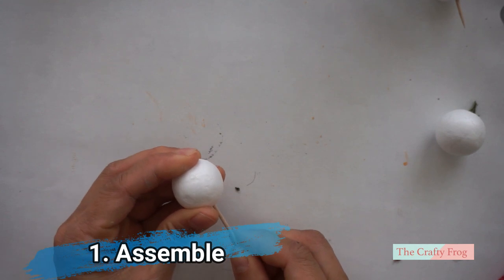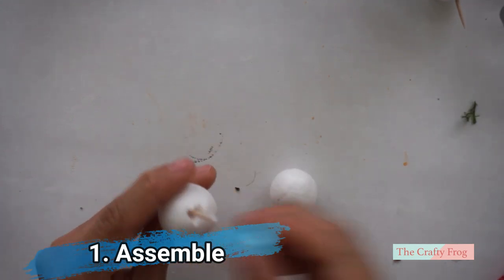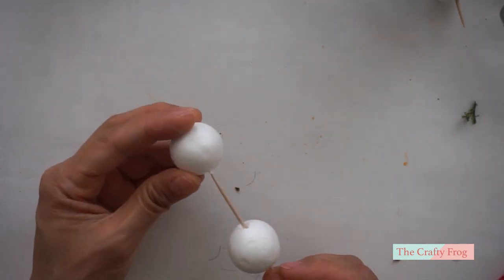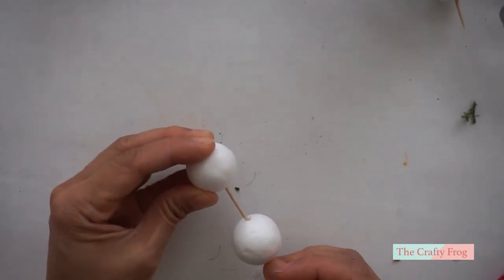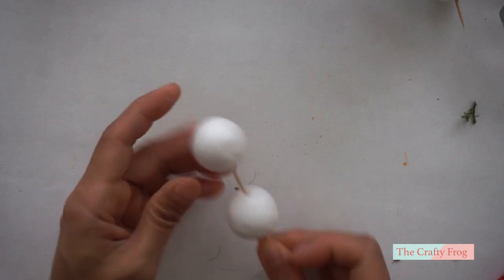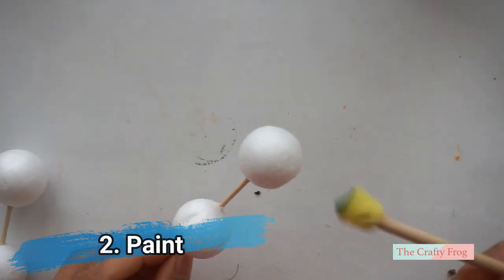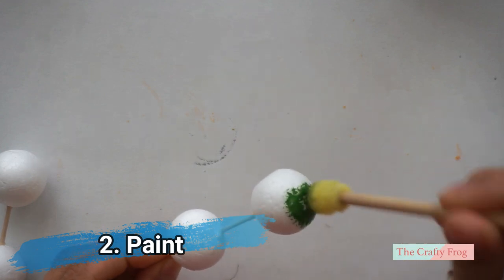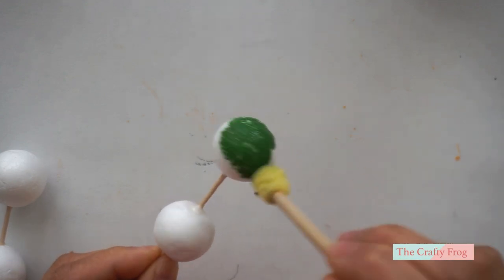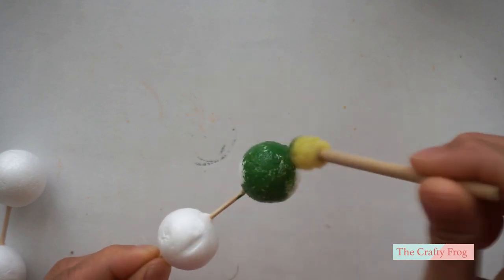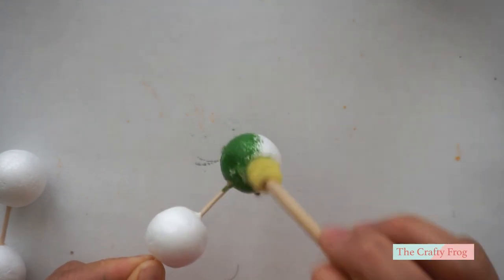Take the styrofoam ball and skewer it to the cocktail stick or the skewer and secure this with glue. Paint the balls and the cocktail stick with green acrylic paint. I am using a sponge brush here and I kind of just dab the paint in the foam. Then let the paint dry.